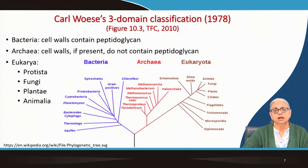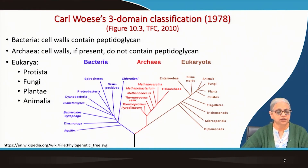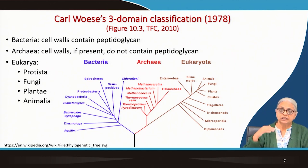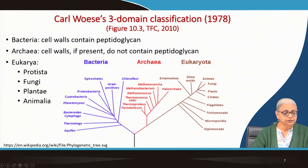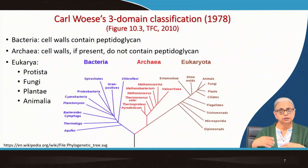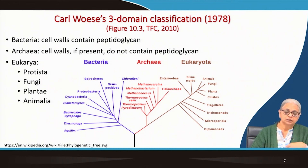We are going to look at the current method of classifying organisms, which is relatively new — dating to 1978. Carl Woese came up with a three-domain classification. These domains are higher than kingdoms. He defined three domains: Bacteria, Archaea, and Eukarya. Bacteria and Archaea are both prokaryotes while Eukarya are eukaryotes. Based on ribosomal RNA sequencing, they have developed this phylogenetic tree of life.